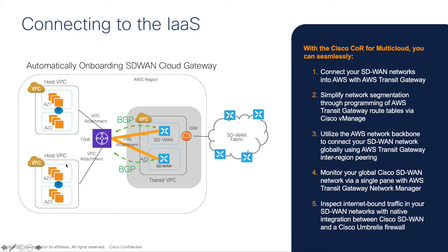The routing protocol we establish is BGP connectivity — we build BGP between our SD-WAN edge and the transit gateway. We also attach two host VPCs, which host the applications you are running, to the transit gateway. Everything will be automatically established and created by the Cisco SD-WAN controllers. Let's take a look at how it works.